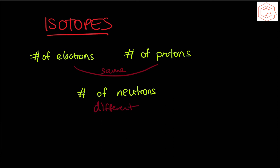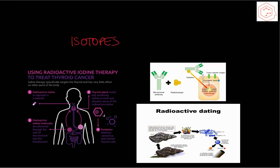Isotopes can also be radioactive when the nucleus decays spontaneously, making the overall compound unstable. There are two applications we can discuss regarding radioactivity. The first is radioactive dating, where each radioactive isotope has a half-life before it decays into another element. The half-life is the time it takes for half of the nuclei in a radioactive sample to decay. By calculating the half-life of an atom, scientists can identify the age of a fossil using an exponential relationship.